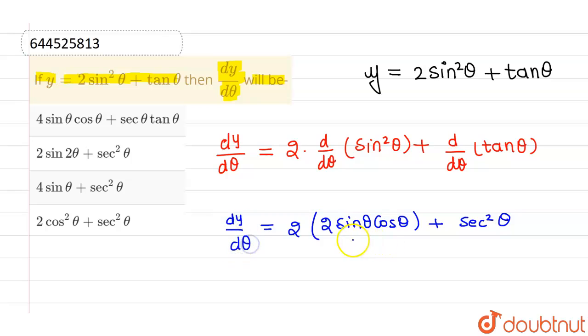Now we know that 2sinθcosθ is nothing but sin2θ. Therefore, this can be written as 2 times sin2θ plus sec²θ.